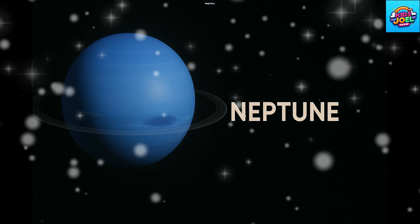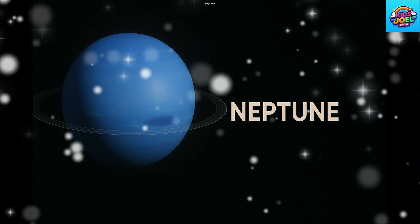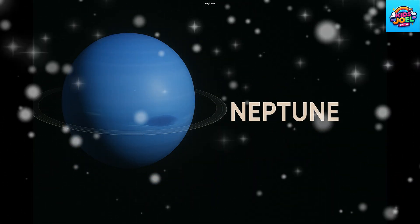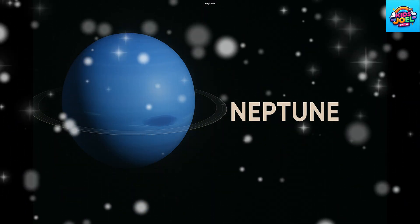To Neptune's windy, dark and deep, its storms are wild, they never sleep. Farthest from the bright warm sun, its orbit is the longest one.